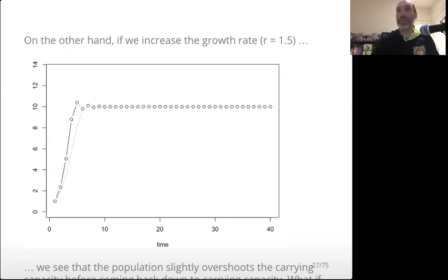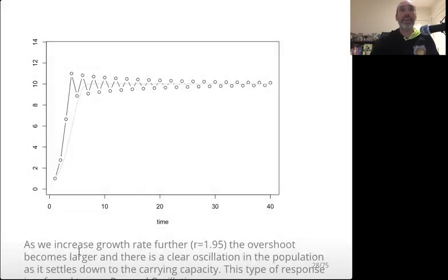So we see if the population slightly overshoots, it comes back. What if we increase the population growth rate even further, say from 1.5 to 1.95? So as we increase the growth rate further, 1.95, the overshoot becomes larger, and this oscillation back down, this damped oscillation becomes even larger.